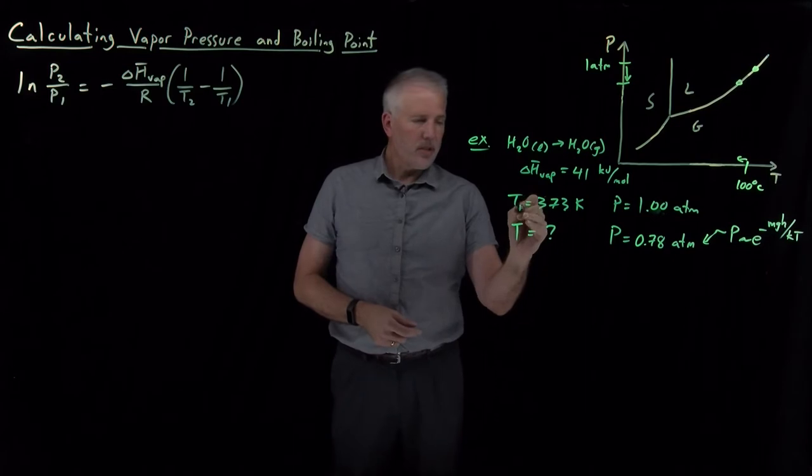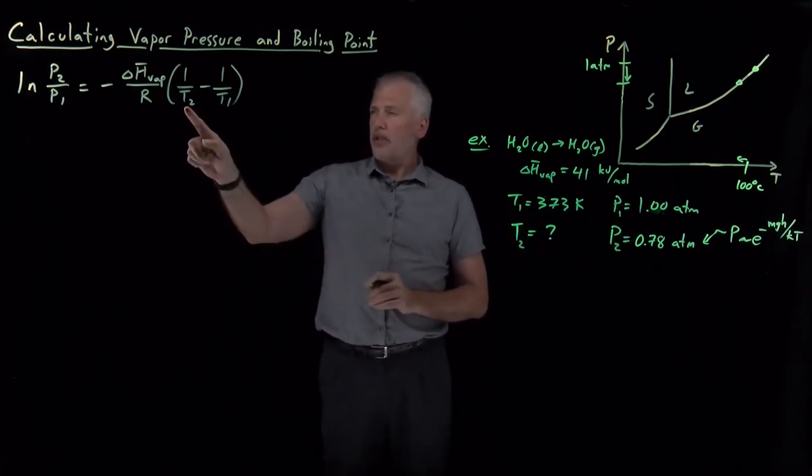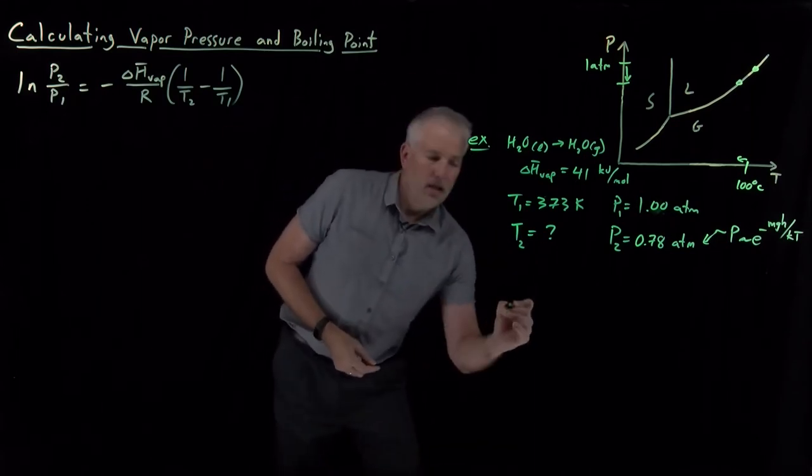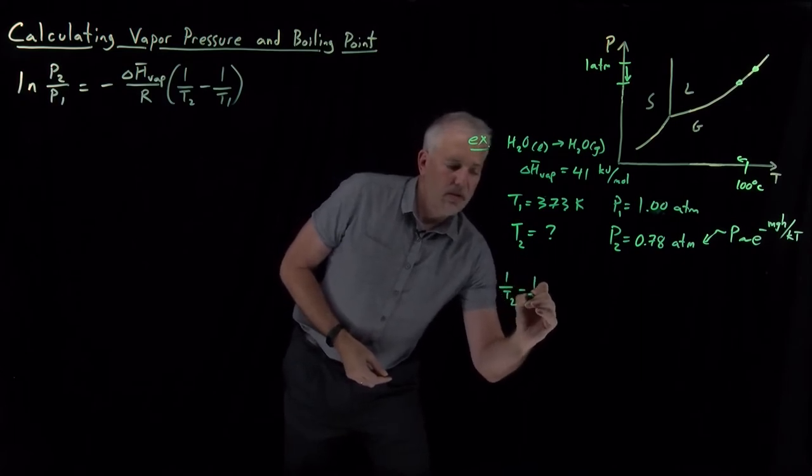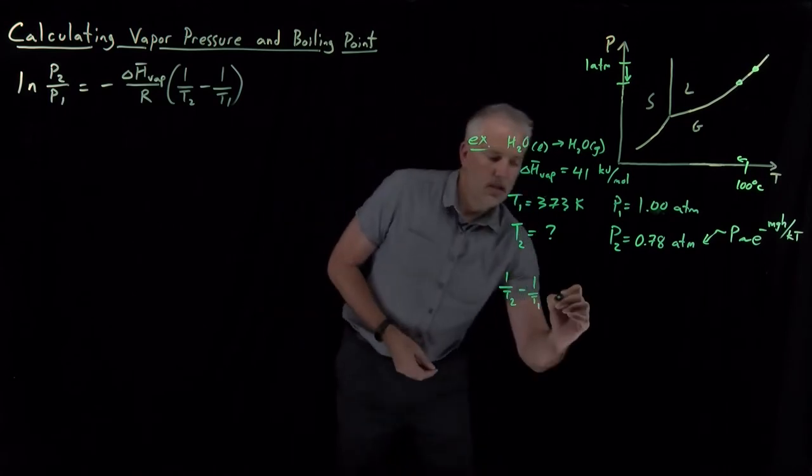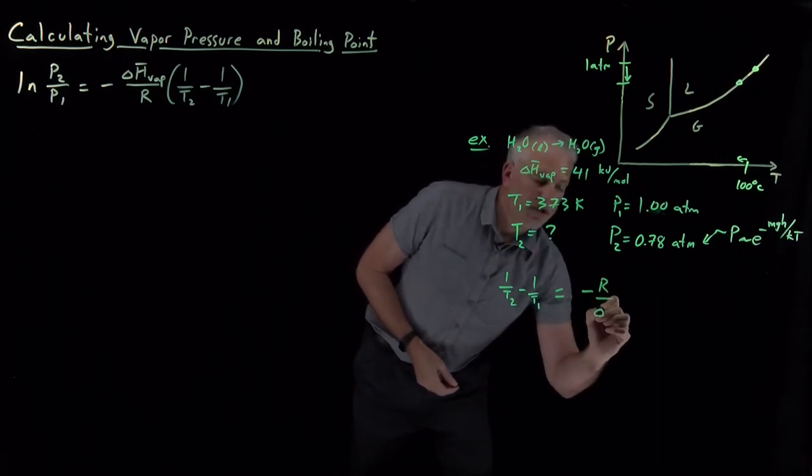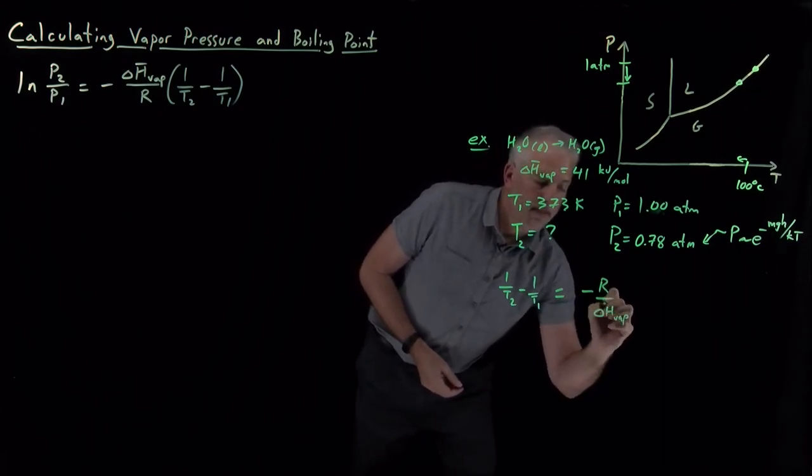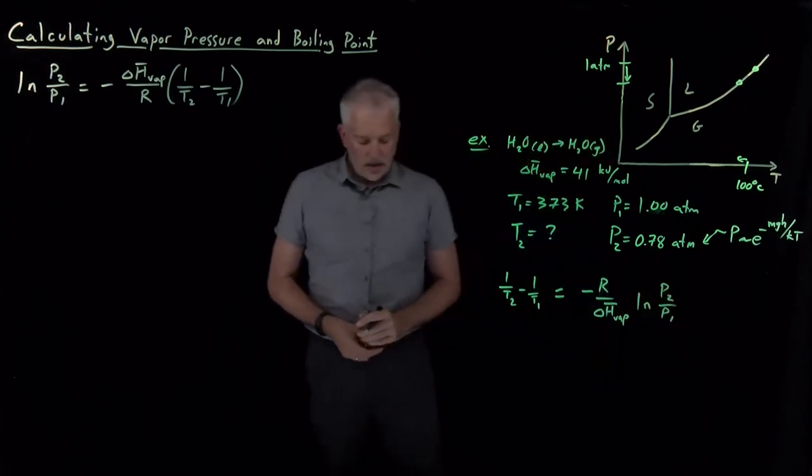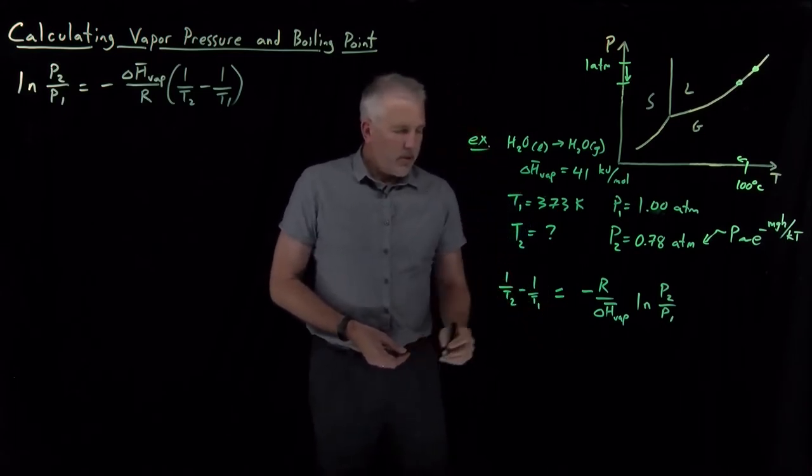I'm looking for, let's call these T1 and P1. I'm looking for T2. If I rearrange this equation to solve for T2, I'll have to do that in a couple of steps. I'll say that quantity in parentheses, 1 over T2 minus 1 over T1 is equal to minus R over the heat of vaporization multiplied by log of P2 over P1.